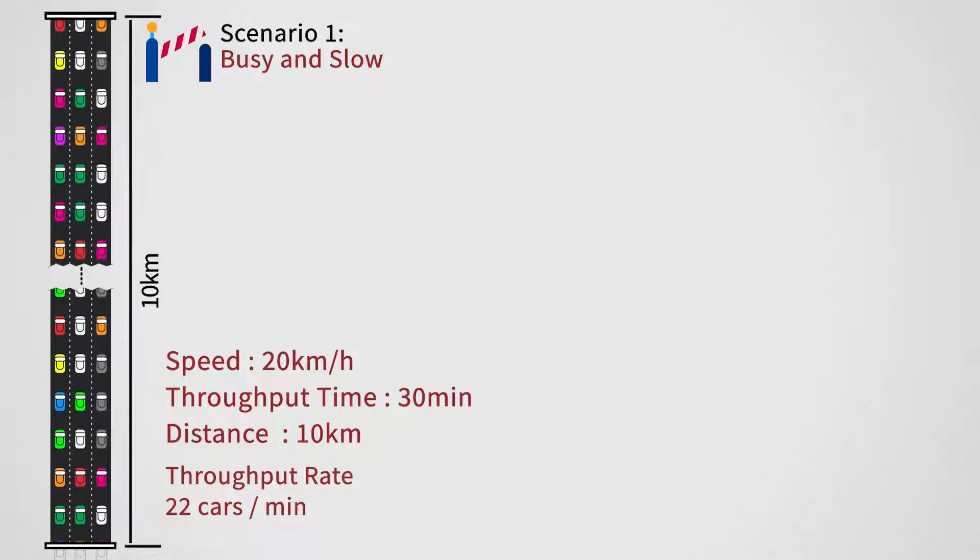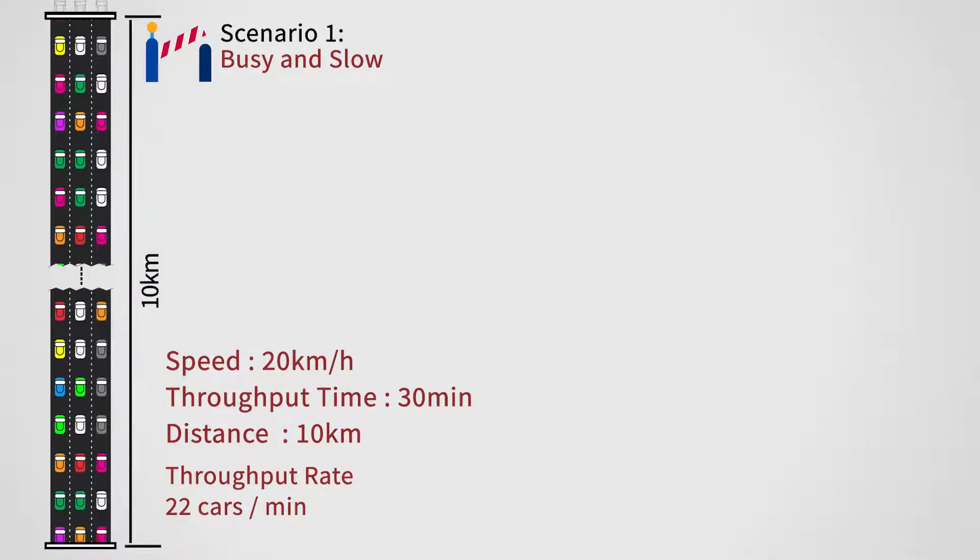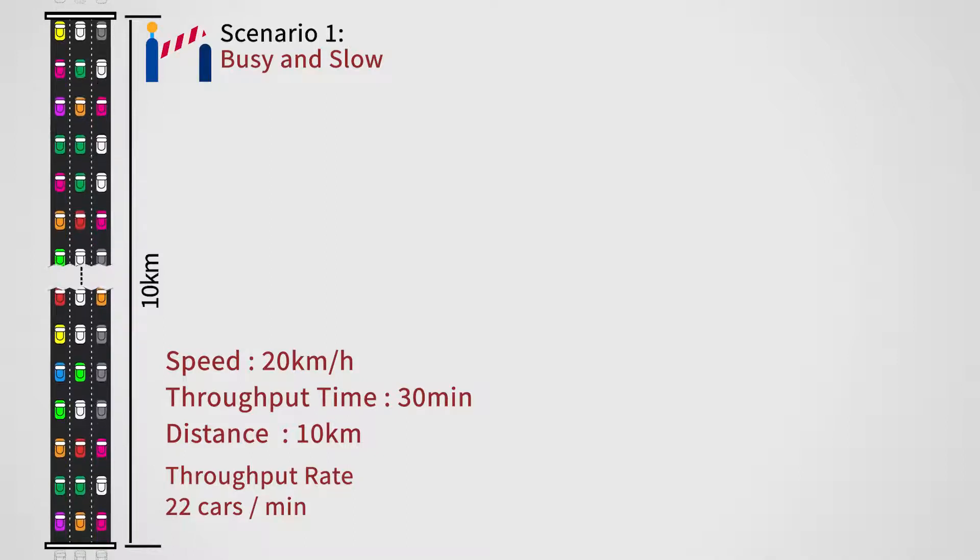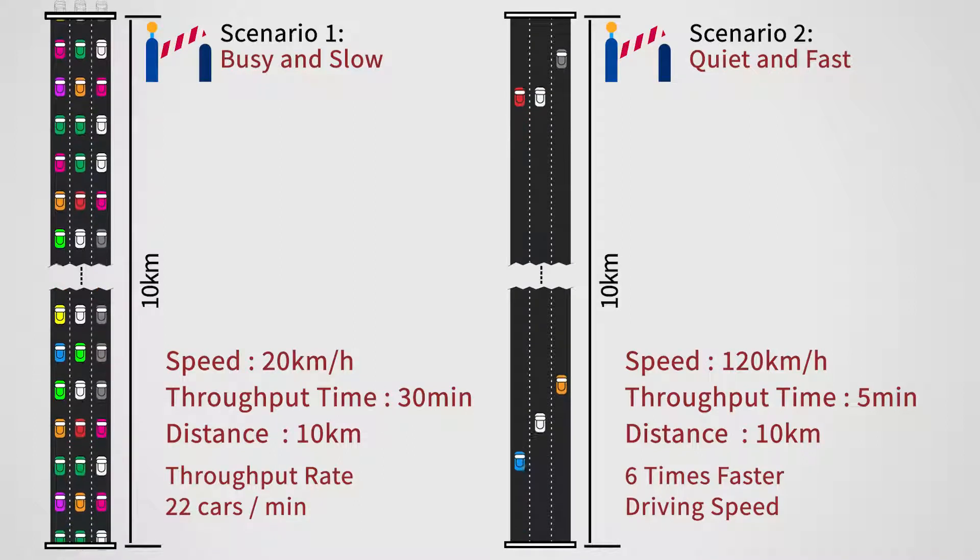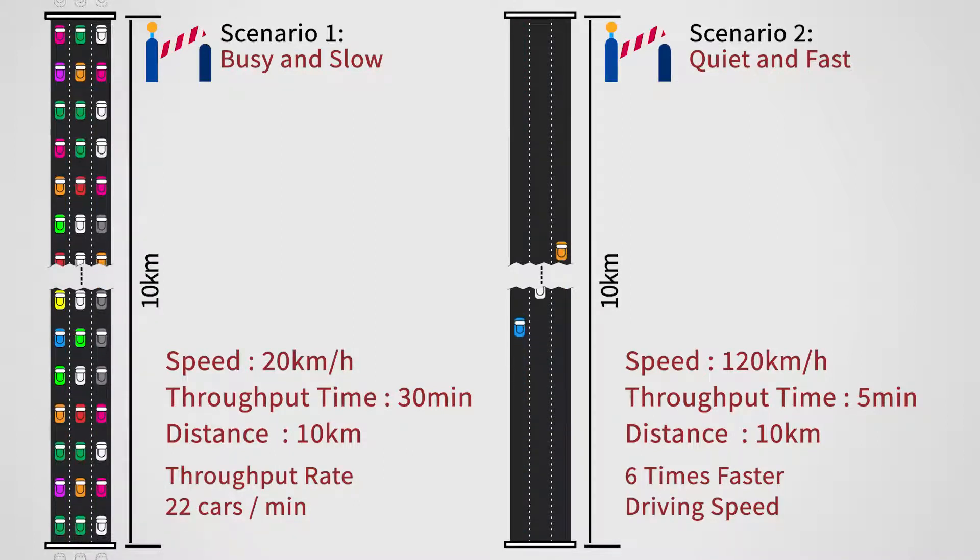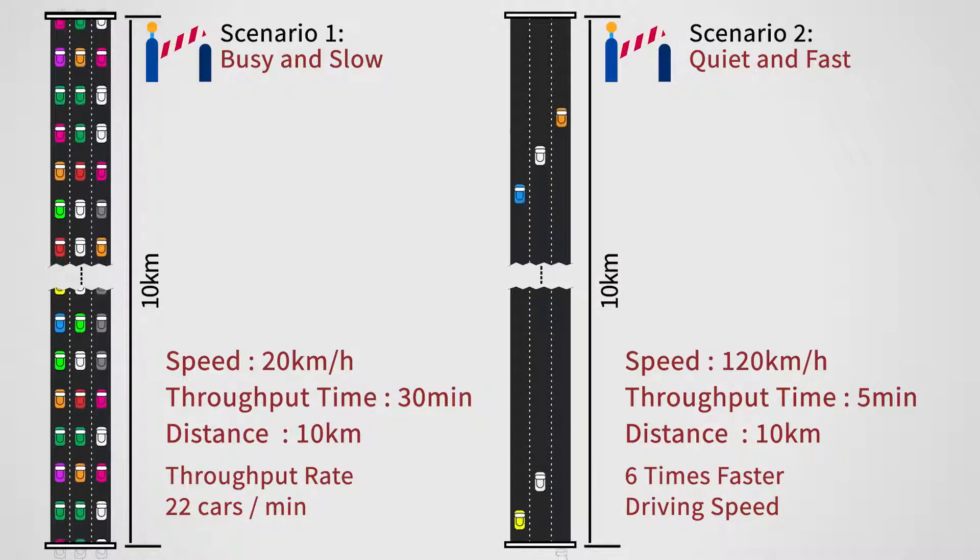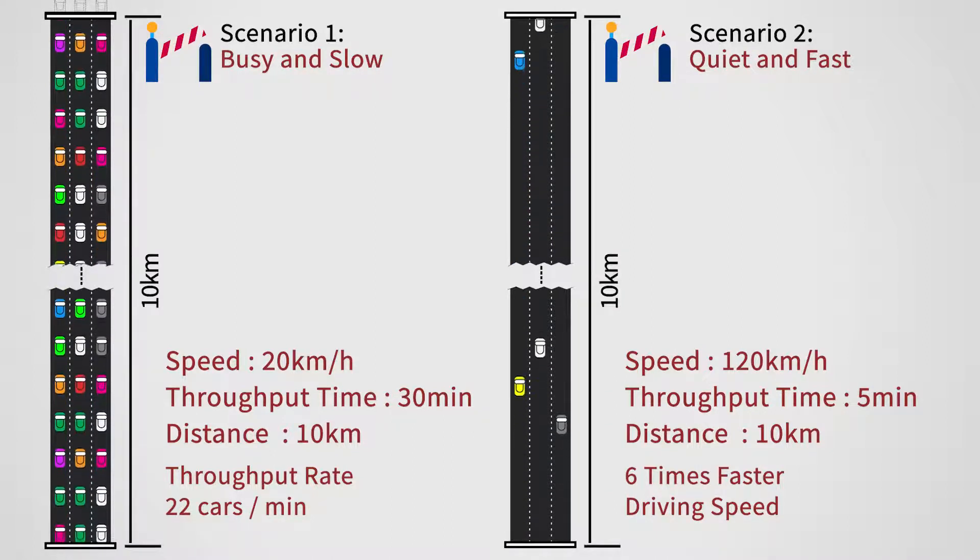The slow, traffic-crammed road continuing to crawl at 20 miles per hour forever, never improving, and also the quiet, fast road, the one with low work in progress, will still also be throughputting the same 22 cars per minute, but whizzing along at much higher speed. The toll road owner might not care too much which situation he gets. Besides, in both situations their throughput rate, and so their income rate, is the same regardless. But the customers of each road, the drivers, they care a lot. Taking 30 minutes or 5 minutes to drive down the road is a big deal.